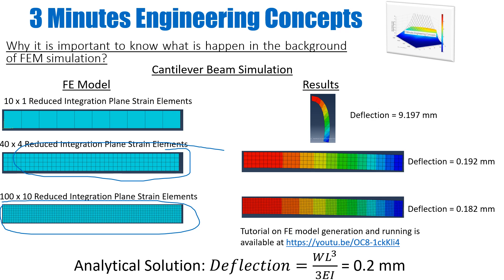The problem with these elements is known as zero energy modes. If you run the simulation with 10 by 1 elements, the deflection can be very high, as you can see in this diagram. In the results column, deflection is around 9.2 millimeters, while my exact solution says it should be around 0.2 millimeters. If I'm just using it as a black box, I don't know what's happening or the negative side of these plane strain reduced integration elements, and I can end up with this kind of result.